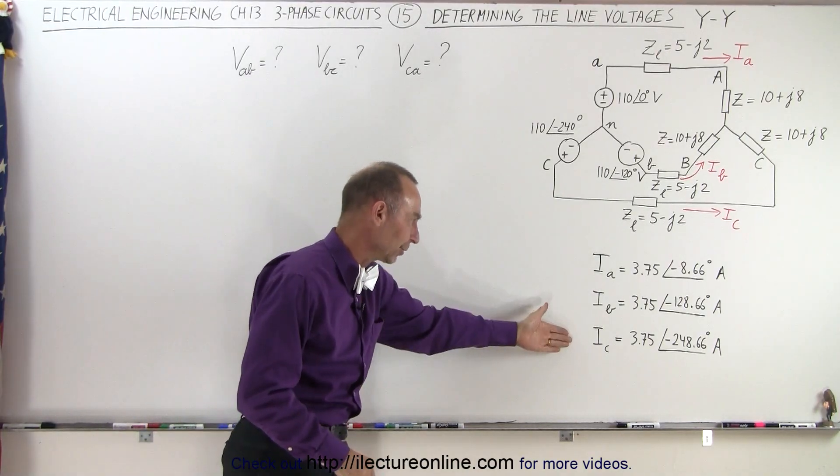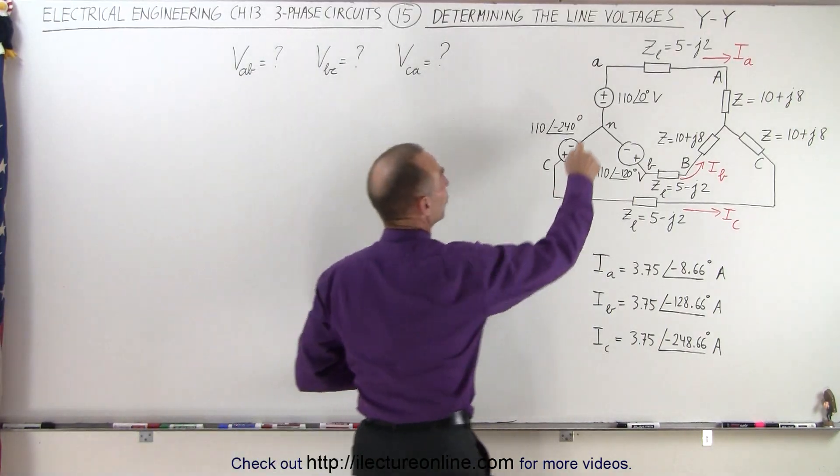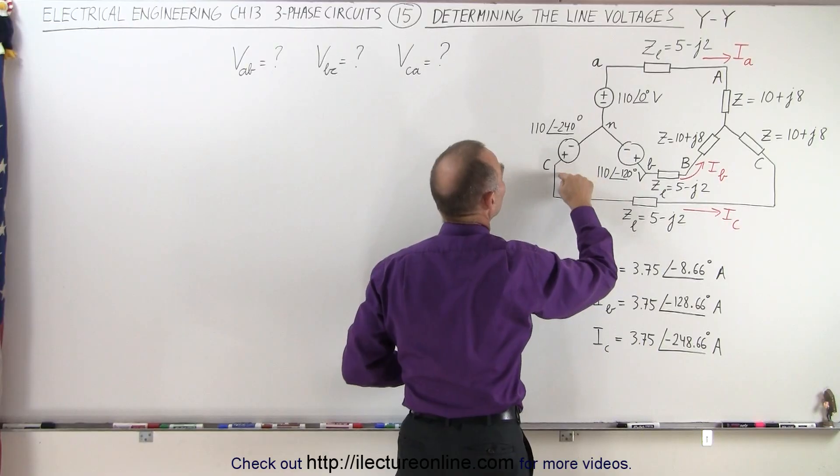So here we have the result for the line currents A, B, and C. And now we're going to find the line voltages: the voltage from A to B, from B to C, and from C back to A.